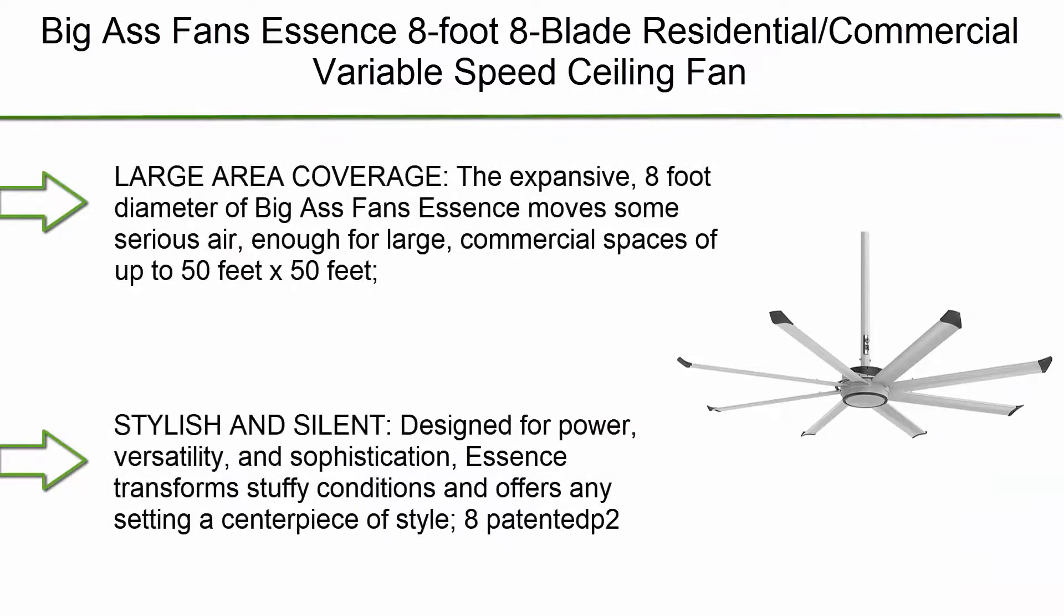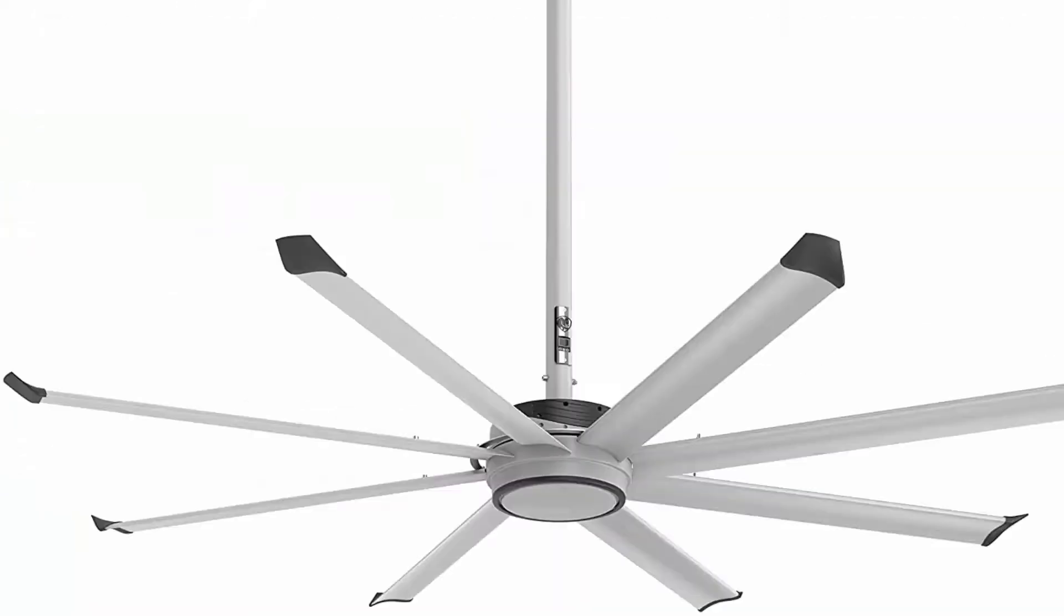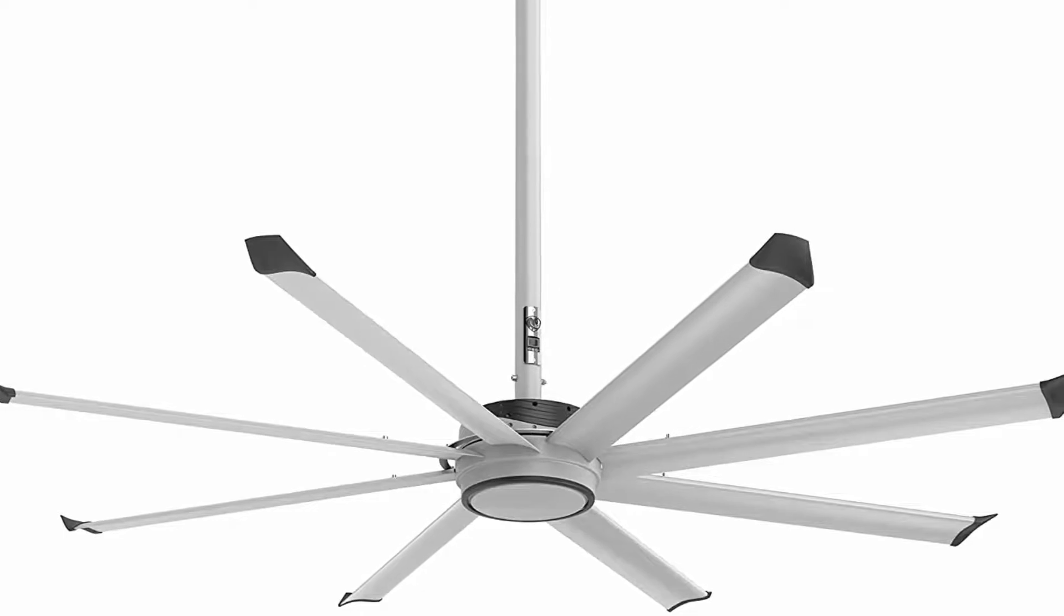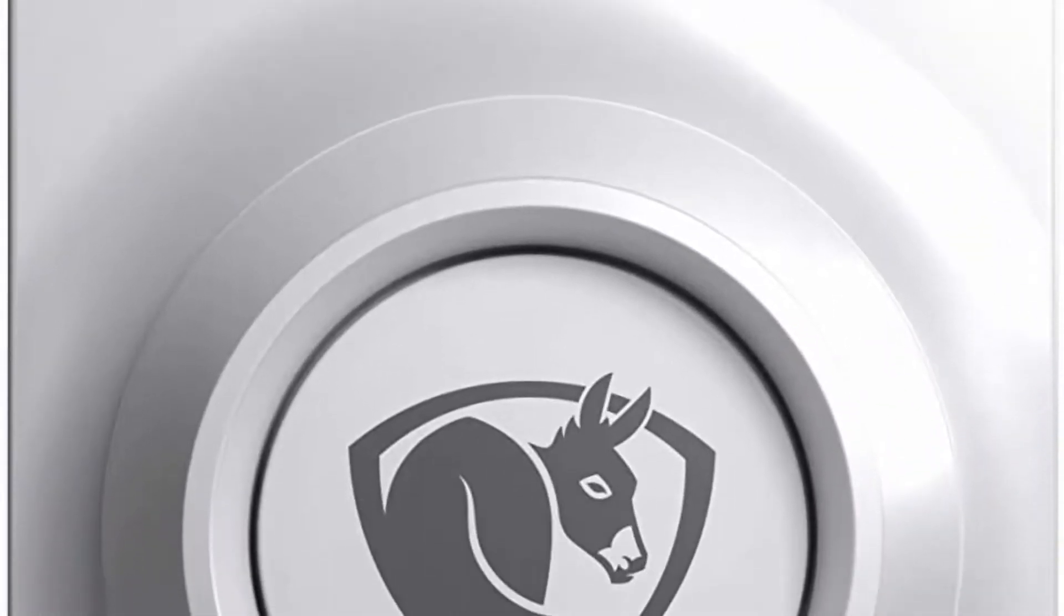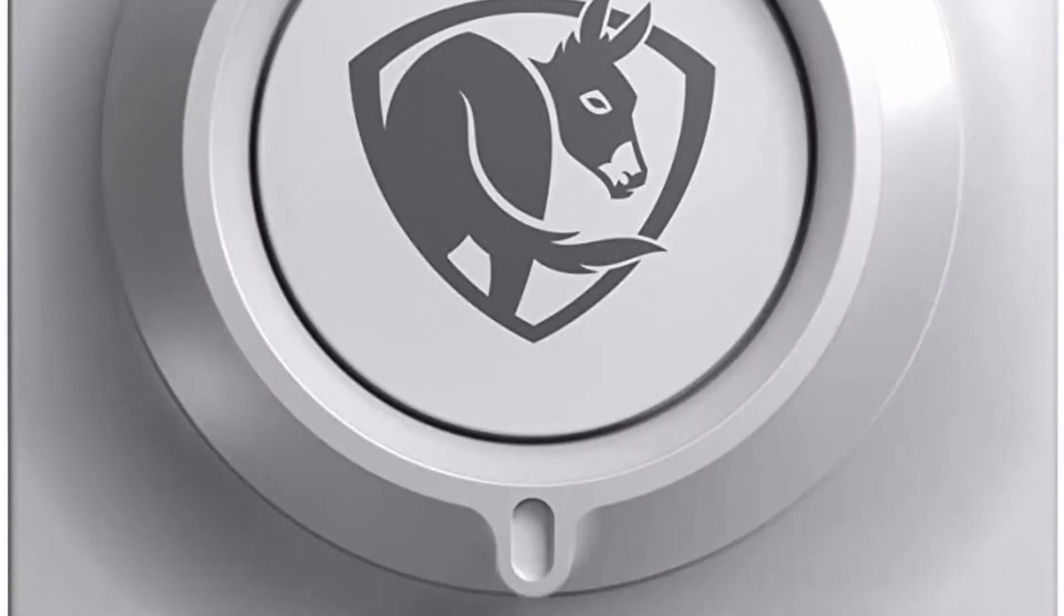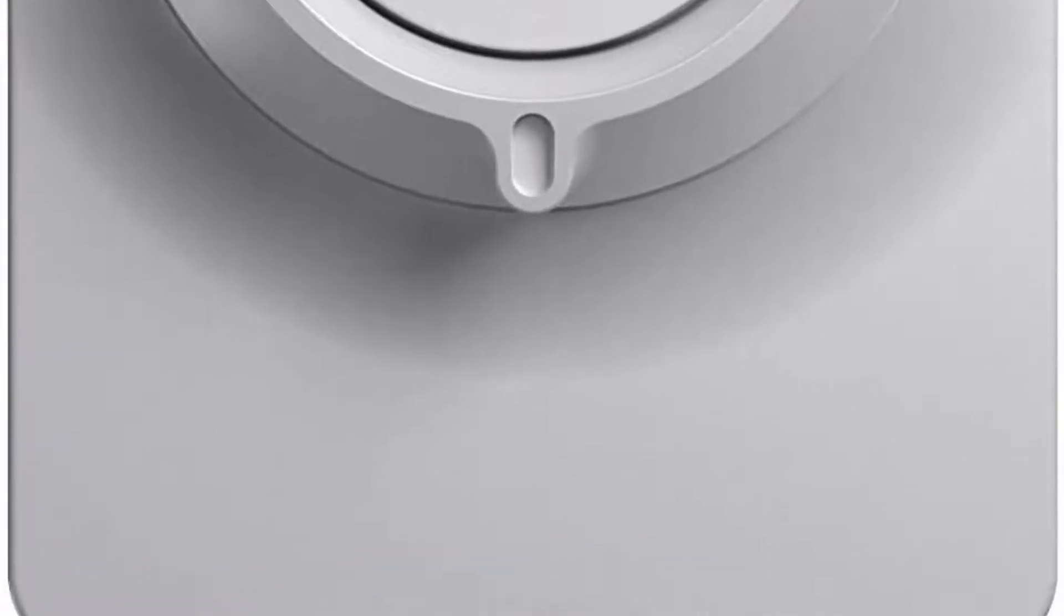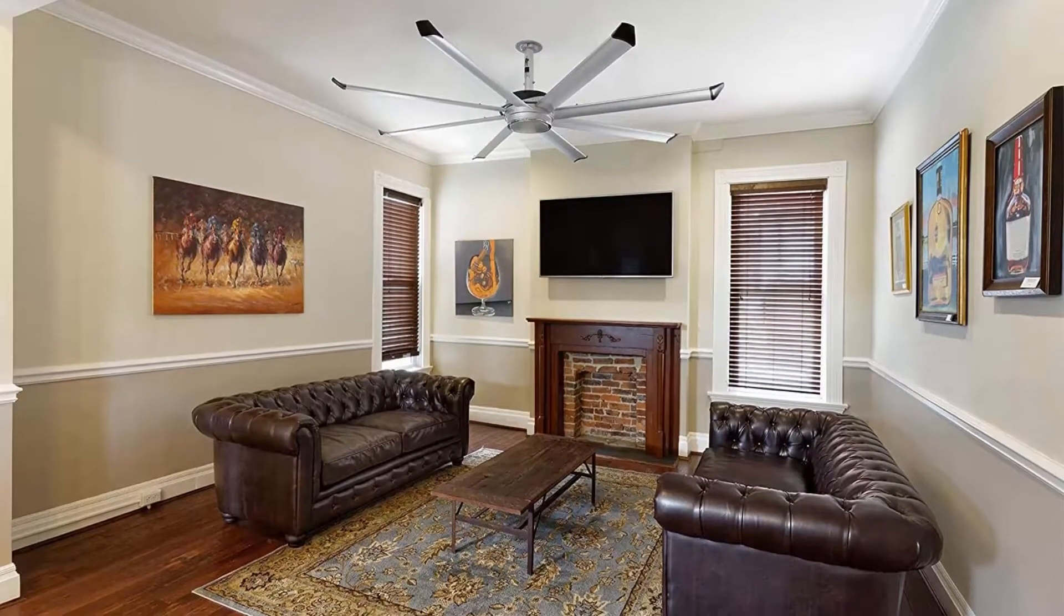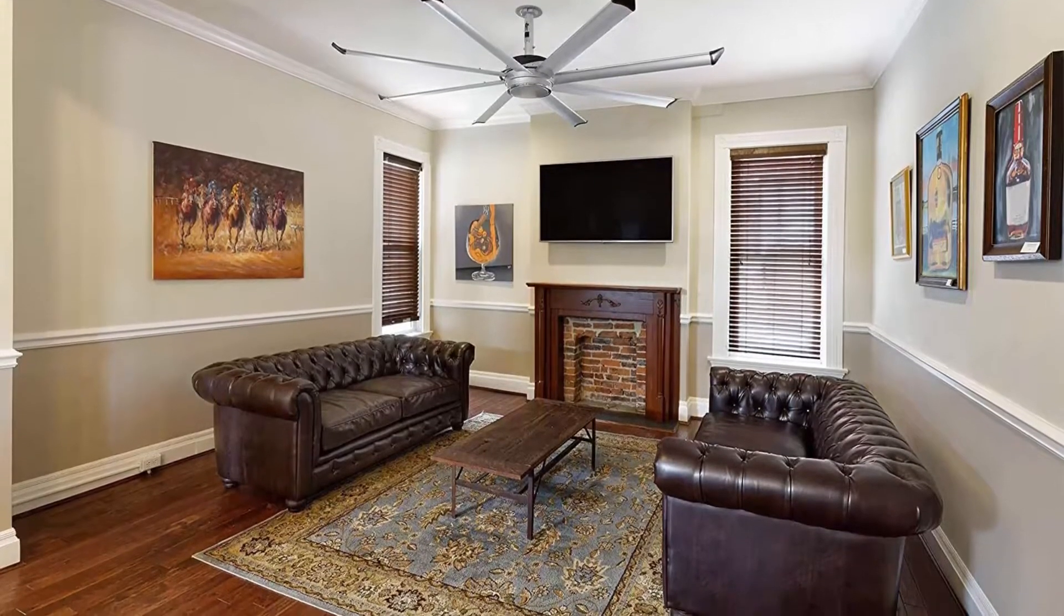Top 2. Big Ass Fans Essence eight foot eight blade residential commercial variable speed ceiling fan, wall mounted dial control, standard mount, for indoor or outdoor use. Large area coverage. The expansive eight foot diameter of Big Ass Fans Essence move some serious air, enough for large commercial spaces of up to 50 feet by 50 feet. Standard universal mount compatible with most common ceiling structures 15 feet to 25 feet high. Additional adapter kit may be required. Stylish and silent. Designed for power, versatility and sophistication. Essence transforms stuffy conditions and offers any setting a centerpiece of style. Eight patented anodized aluminum airfoils maximize performance without drag. Maintenance free, gearless drive motor delivers whisper quiet airflow, 35 bar, that keeps employees motivated, customers engaged, and guests in awe of your space.